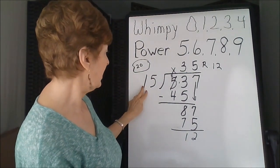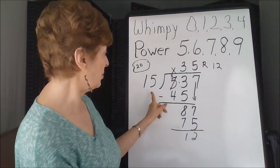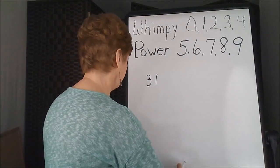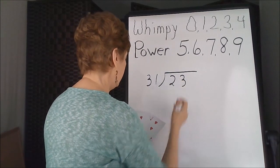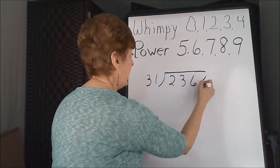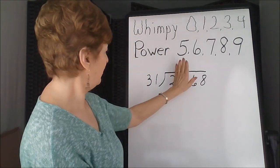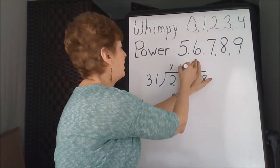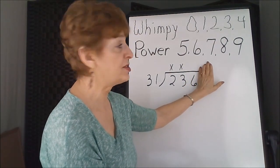31 divided into 2368. First number, 2 is too small. 23 is too small, 236, that's where we need to put our first answer.